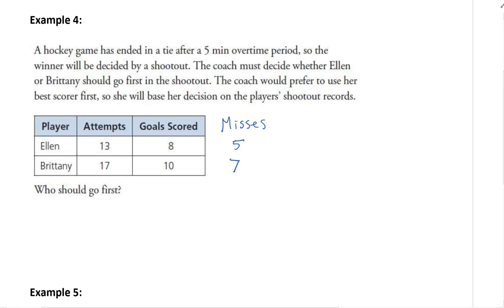If we looked at our odds for each of our two players, we can decide who should go first. Let's look at the odds in favor for each player. For Ellen, odds in favor would be 8 to 5. For Brittany, odds in favor would be 10 to 7.